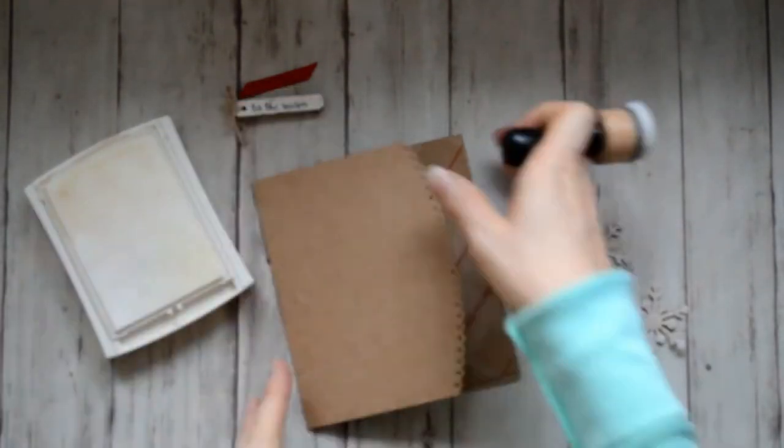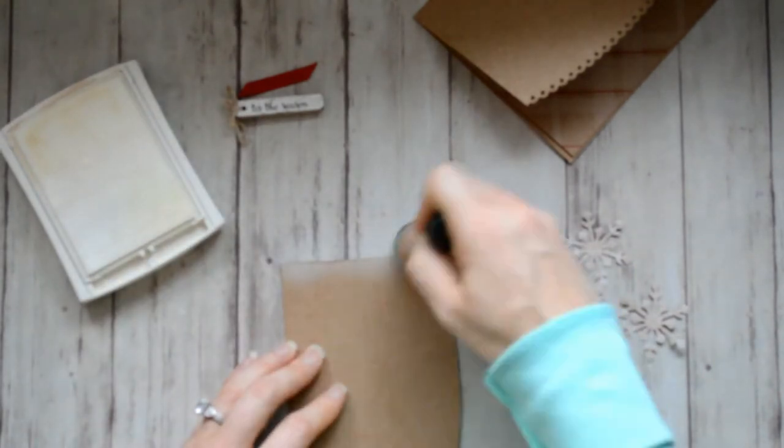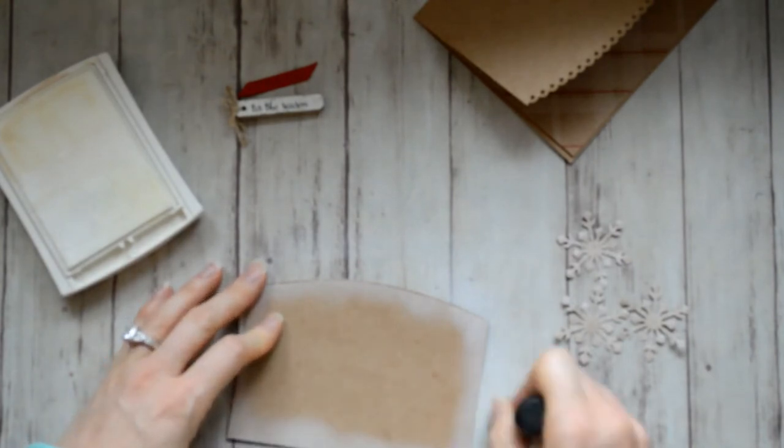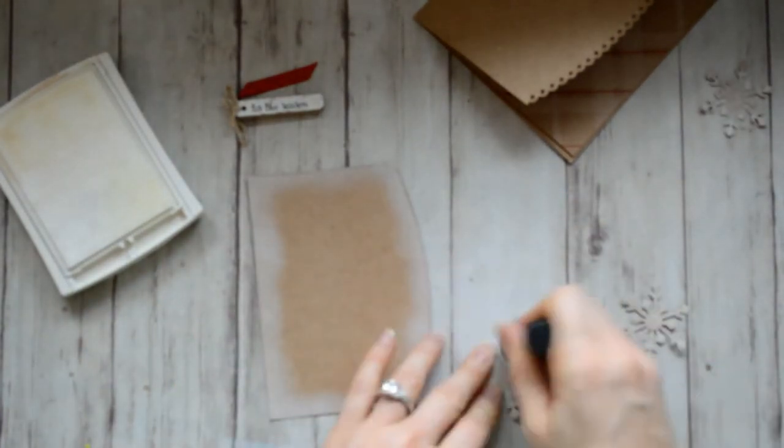And I don't have the best camera equipment, so I didn't get it focused right here. Sorry about that. I've got Whisper White ink and I'm inking the edges of the paper using an ink blending tool. And I also go ahead and add a little more white to the snowflakes.